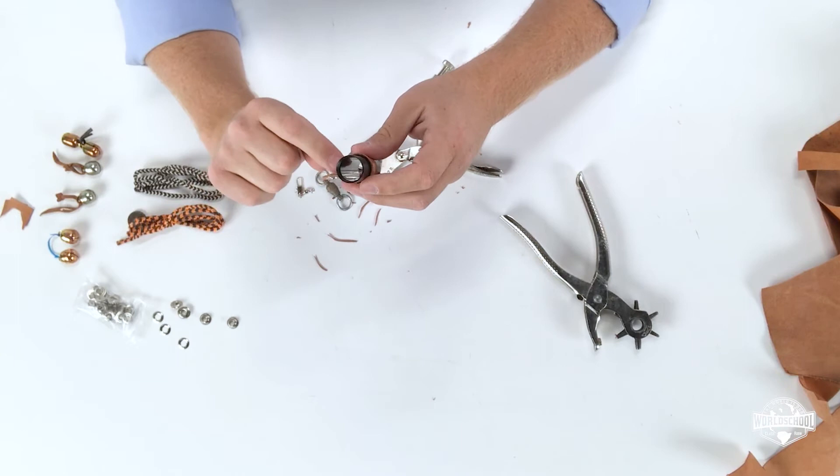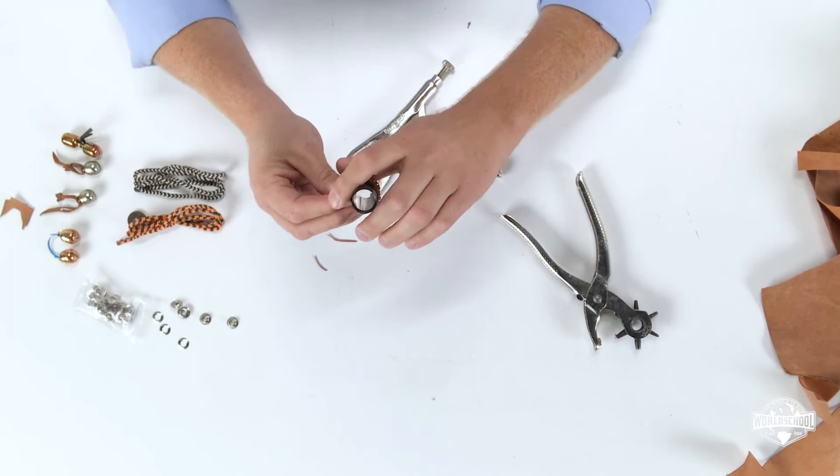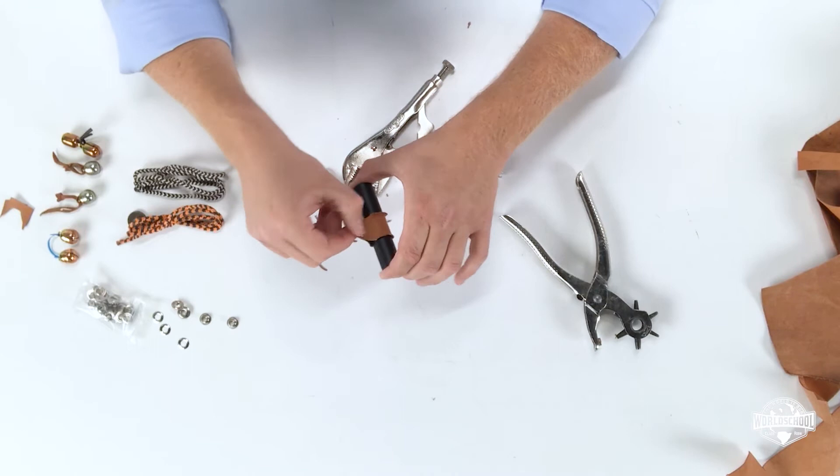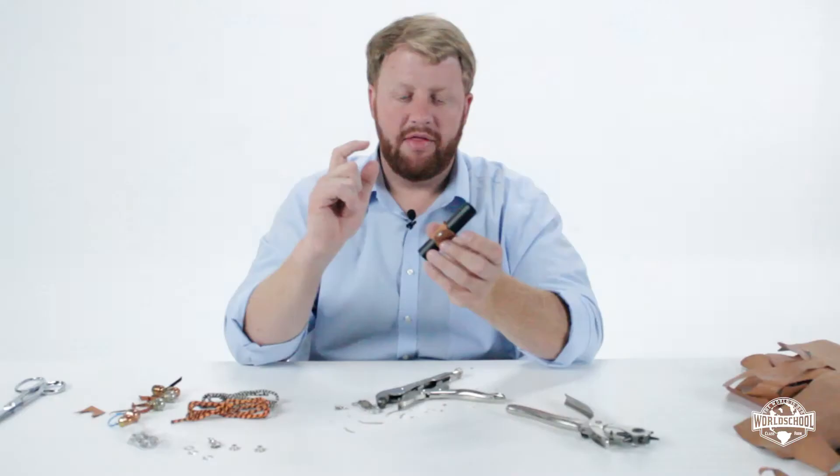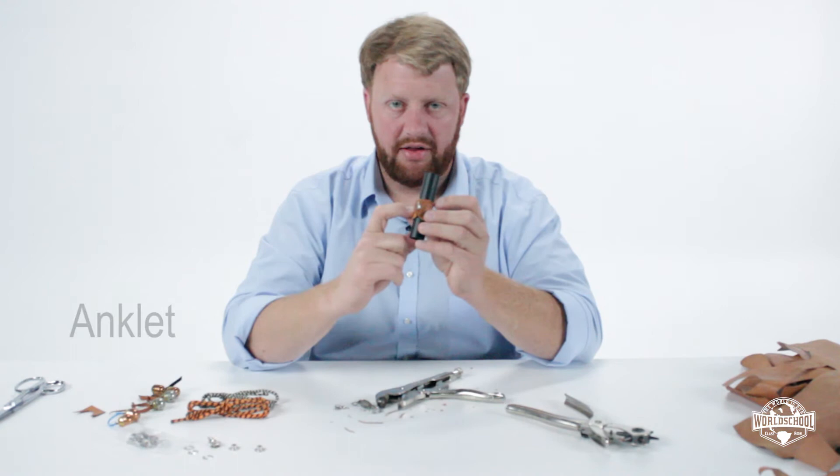Now again, this would have been held in place with a little dab of super glue. We didn't worry about that because we weren't doing this on an actual bird. Now you can see that that still turns and is loose. Now this is wider than we would normally do on a bird of prey. I'm making this a bit oversized so you can see how this process works. This is called an anklet.